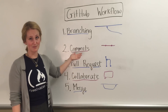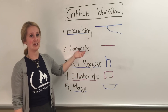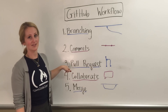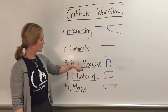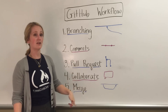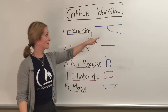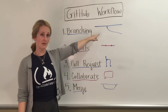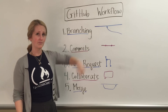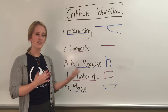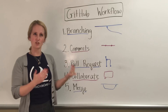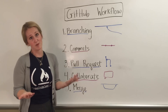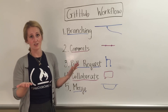Once you've made some commits to introduce your changes, you'd open up a pull request on GitHub.com. In this pull request, you're comparing the branch you made with another branch, like master. It gives you an opportunity to look at the differences between those two branches and show other people the differences as well.